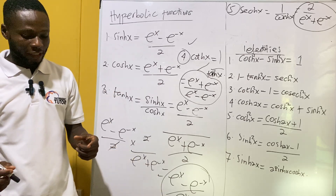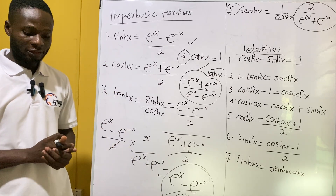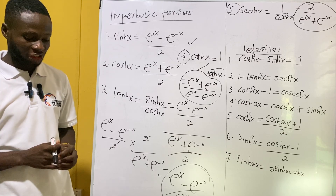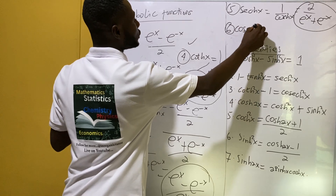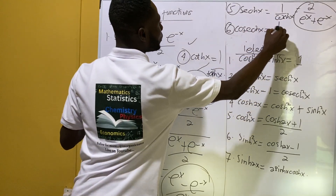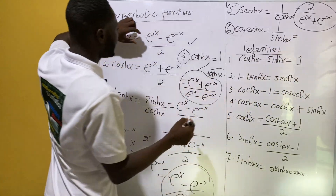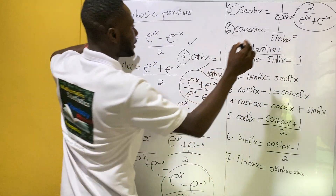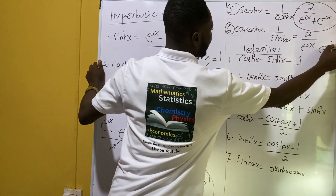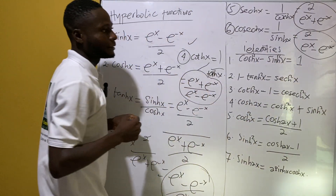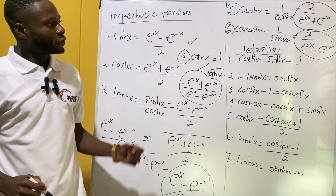The sixth hyperbolic function is csch, and we know that csch is one over sinh. So the hyperbolic function for csch(x) is one over sinh(x), and taking the reciprocal gives us two over e^x minus e^(-x). That is the hyperbolic function for csch.